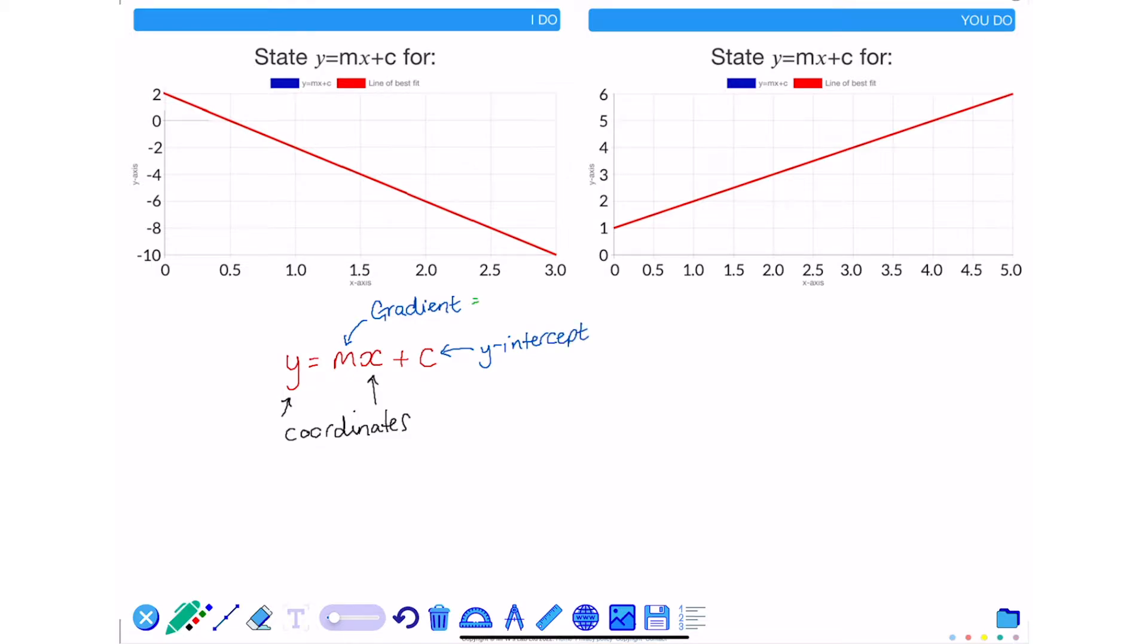The gradient can be calculated by rise over run, and what this means is the change in y divided by the change in x between any two coordinates on the line itself.